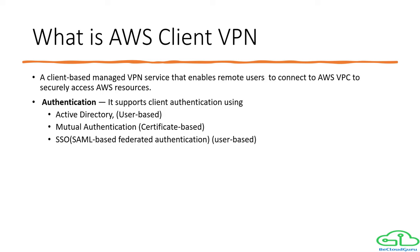The first feature to talk about is authentication. AWS Client VPN supports three different types of authentication — two are user-based and one is certificate-based. For user-based we have Active Directory and SSO or SAML-based federation. For certificate-based we have mutual authentication, which we're going to try out in our demo today.